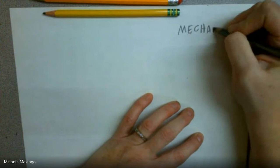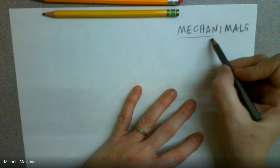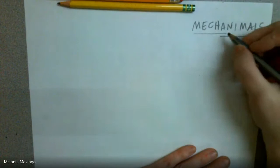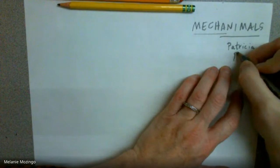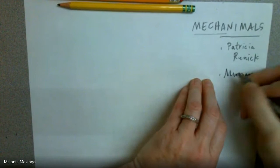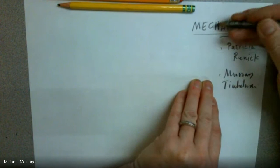They're called McAnimals, a mechanical animal. So what this looks like - basically, there are lots of artists. One that we're going to look at in class is Patricia Rennick. There's another one, his name was Murray Tinkleman, and both of them show this idea of a mechanical animal.